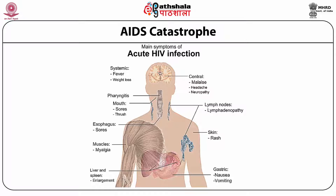The main symptoms of acute HIV infection include fever, weight loss, headache, neuropathy, lymphadenopathy, skin rash, nausea and vomiting (gastric), liver and spleen enlargement, myalgia, and mouth and sore throats.